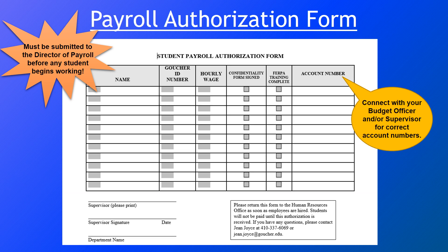The payroll authorization form must be submitted to the director of payroll before any student begins working. Everything on this form must be filled out correctly, otherwise it could result in a delay in paying your students. Start the hiring process as soon as possible to avoid any issues. This form must include the student's name, their ID number, the approved hourly rate by the student employment coordinator, the confidentiality form signed, and FERPA training complete. The account number in the last column is one of the most important pieces — those are the account codes from which your student wages will be pooled. If you do not know your account number, please contact your supervisor, as it is very important that this information be correct on the document.